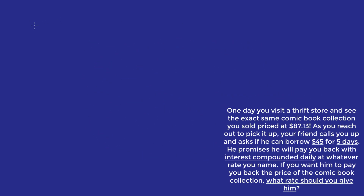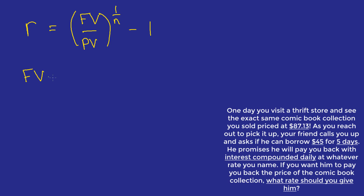This question can seem a little complicated. However, it's important to remember that we're dealing with the same variables — all that's changed is what we know and what we don't know. The unknown is the rate of interest, or the r value. But we do know the expression to find it: future value over present value, raised to 1 over n, minus 1. The future value is the cost of the comic book collection: $87.13. The present value is $45, the amount we're loaning to our friend.